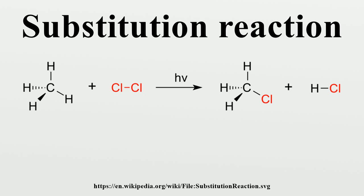A radical substitution reaction involves radicals; an example is the Barton-McCombie reaction. Coupling reactions are a class of metal-catalyzed organometallic substitutions involving an organometallic compound R-M and an organic halide R'-X that react to form a compound of the type R-R', creating a new carbon-carbon bond. Examples include the Heck reaction, Ullmann reaction, and Wurtz-Fittig reaction. Many variations exist.